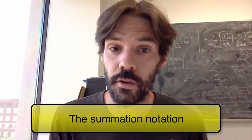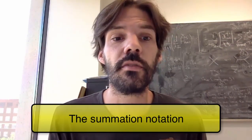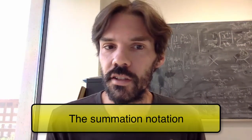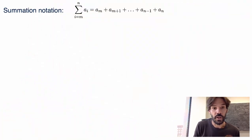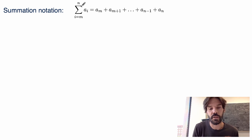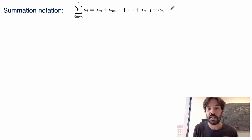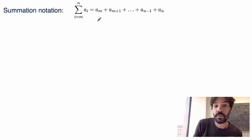Before we move on and study definite integrals and Riemann sums, let me give you a little aside on the summation notation introduced in the previous video. I introduced the sigma notation, which means summing the coefficient a_i from i equals m to n. What it means is that I have the expression a_m plus a_{m+1} plus so on all the way to a_n.